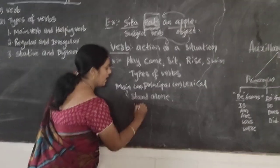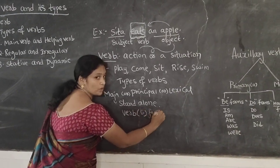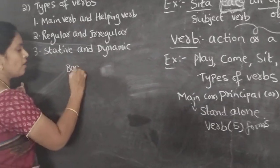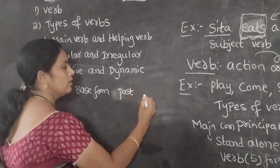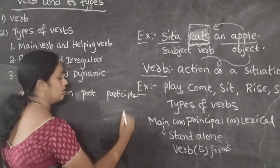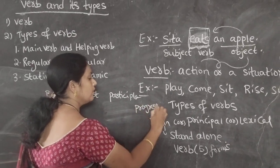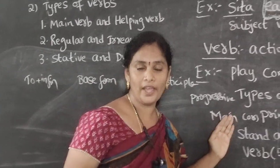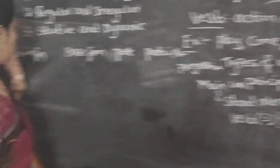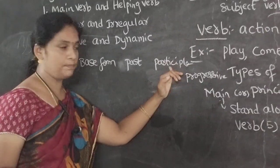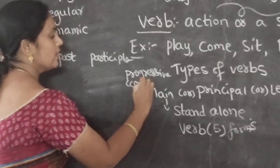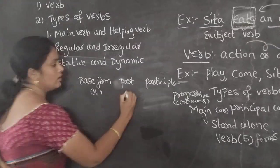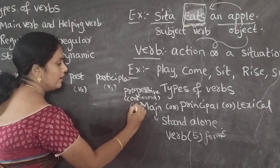Every main verb has five forms. Those are: base form (V1), past form (V2), participle (V3), progressive or continuous (V4), and to-infinitive. So how many forms do we have for any verb? Five: base, past, participle, progressive, and to-infinitive.